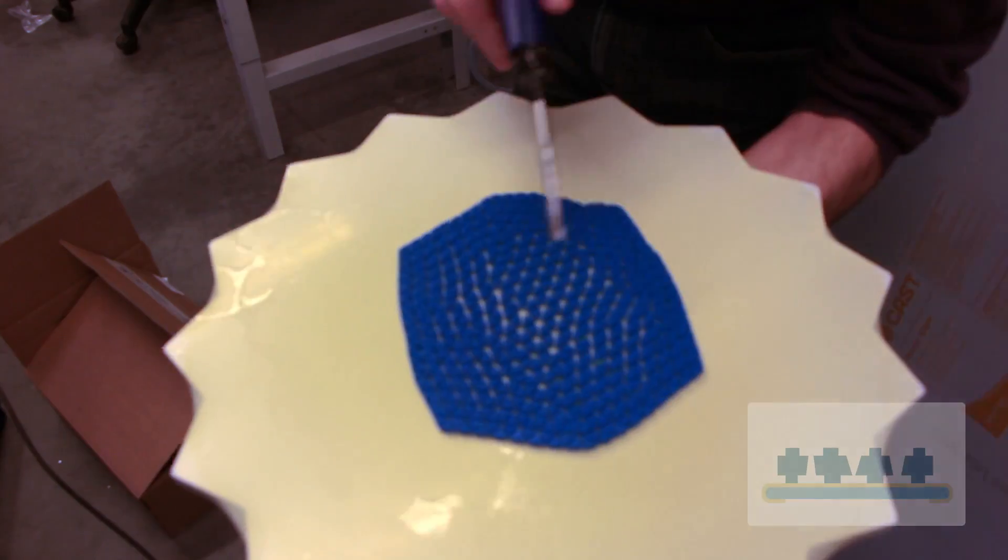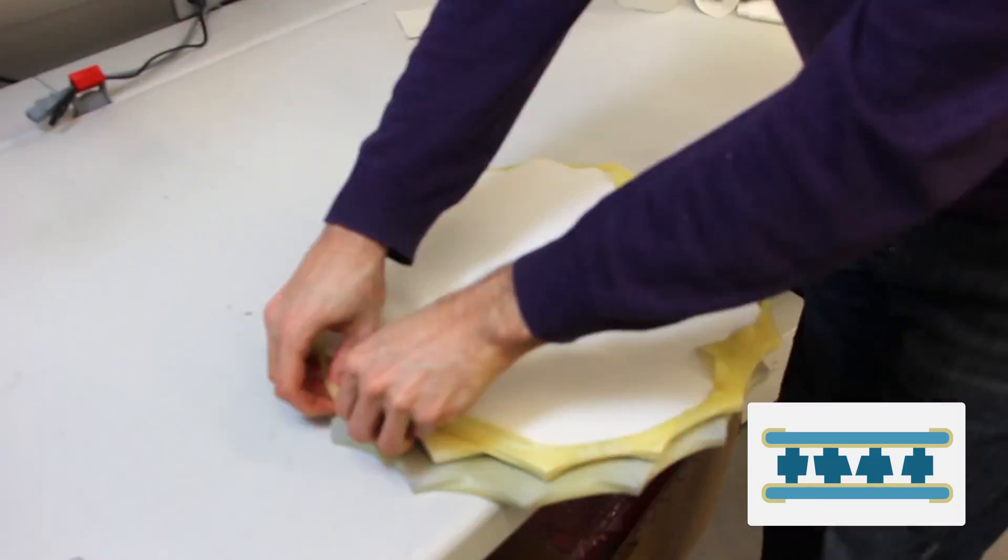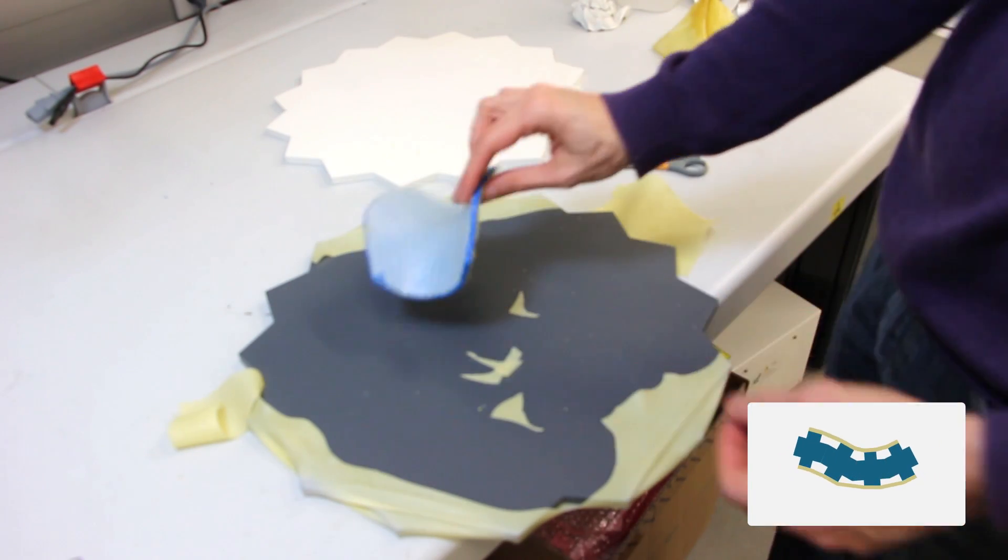Next, we remove the support material using a water jet and dry the structure. Finally, we glue the second stretched sheet to the tile layout, cut out the membrane surplus and obtain the actuated shape.